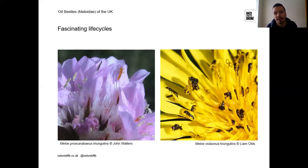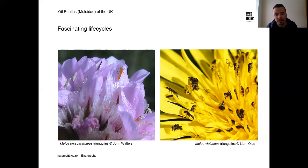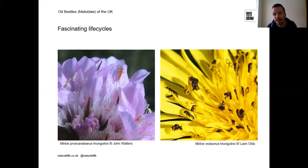The triunglids are long-legged because they need to position themselves on flowers. The first stage of the life cycle is getting up onto flowers to await a solitary bee. Black oil beetle triunglids, which are orange, can be hard to see; violet oil beetle triunglids are black and contrast well against yellow dandelions, making them easier to spot. Yellow flowers like dandelions and buttercups are often the best places to look.